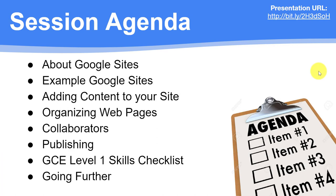That information could be about a company and things to purchase from that company. It could be a Facebook page with information about a person. It could be a school site about information for that school and the teachers. So in a classroom, all we want to do is display information. It could be information about projects, information that maybe once was contained in a book report but now is contained in a Google Site. It could be a portfolio for an art student — any number of things. All Google Sites is, is a place to house all that information.